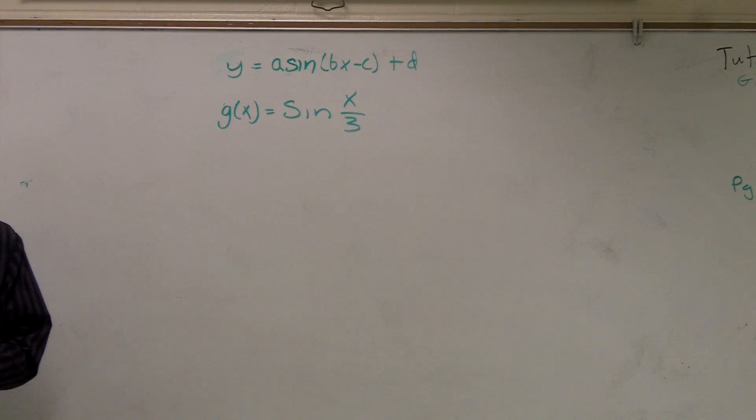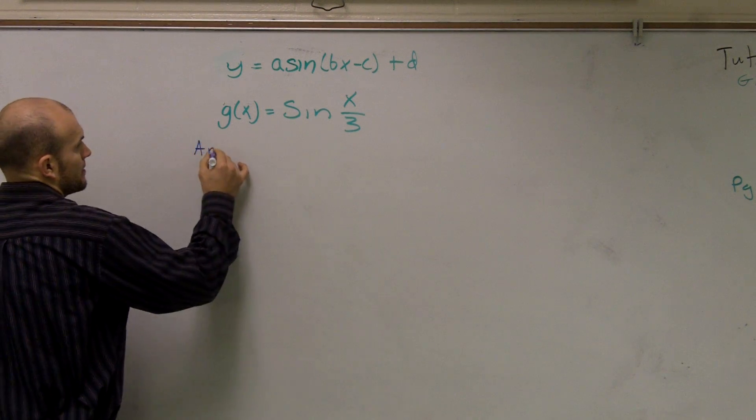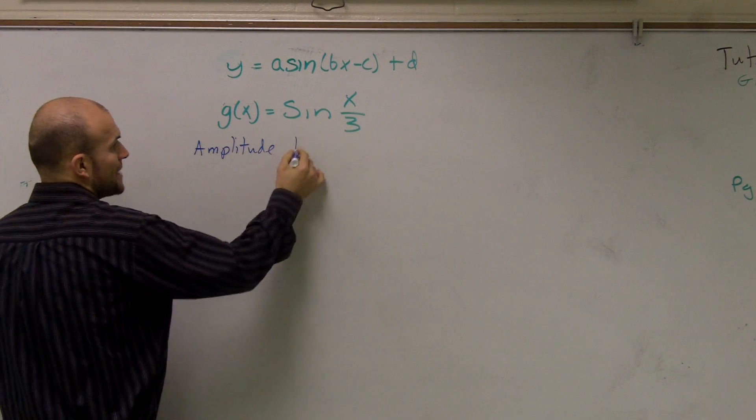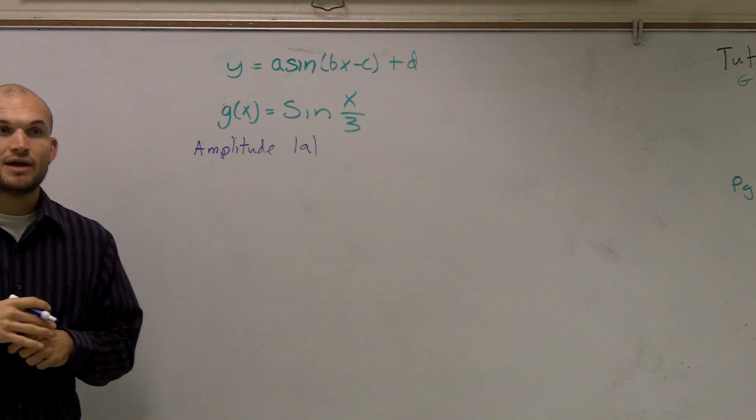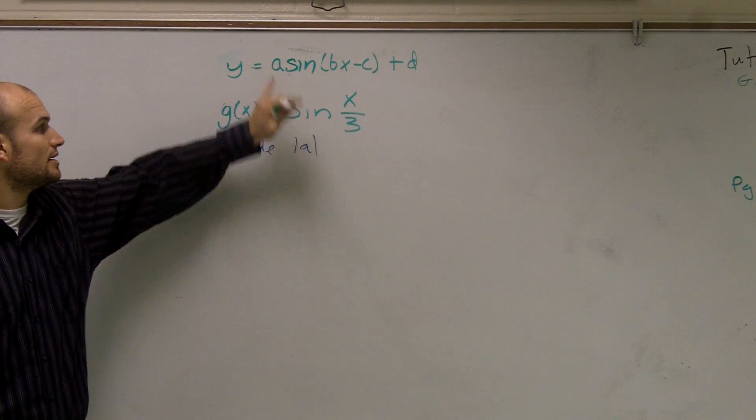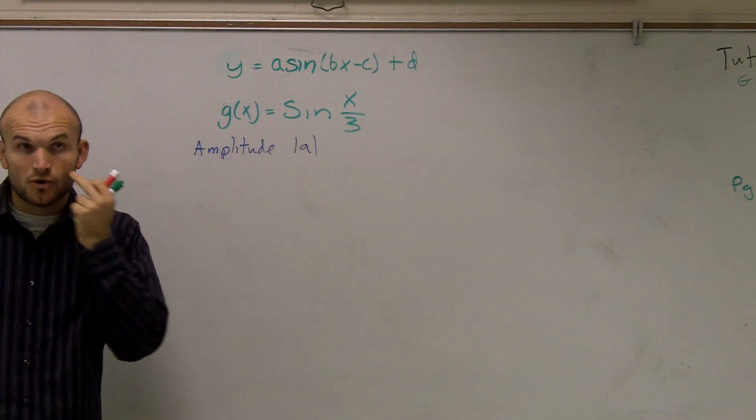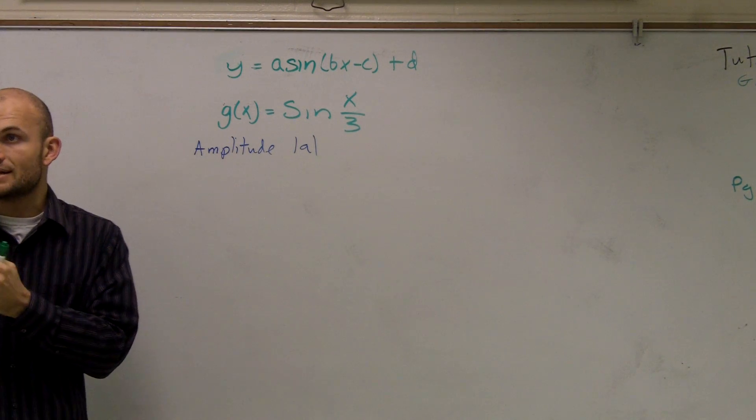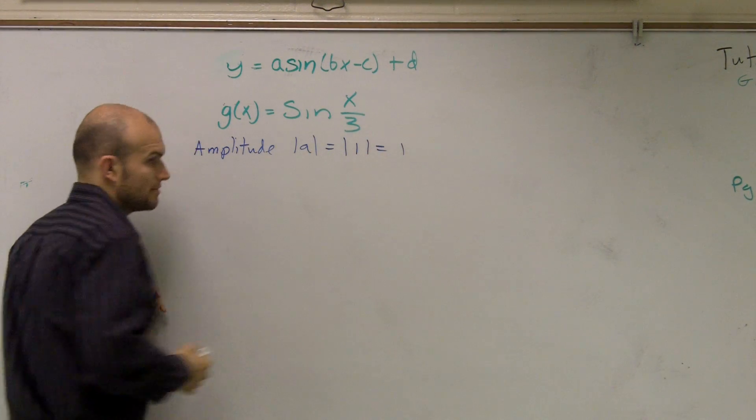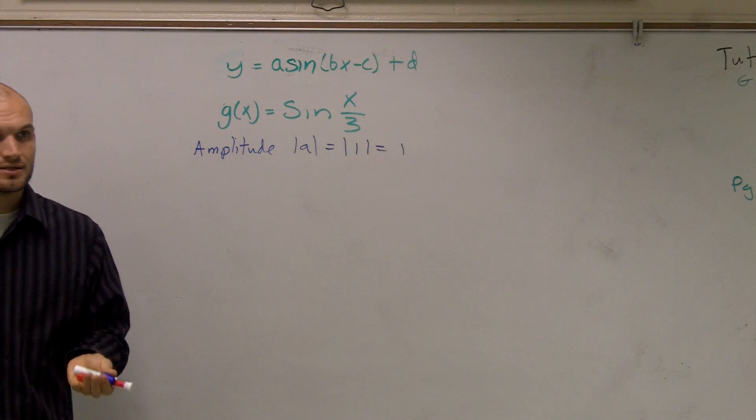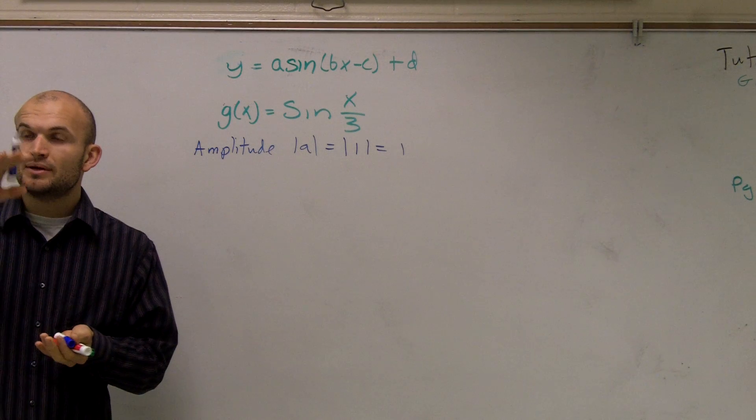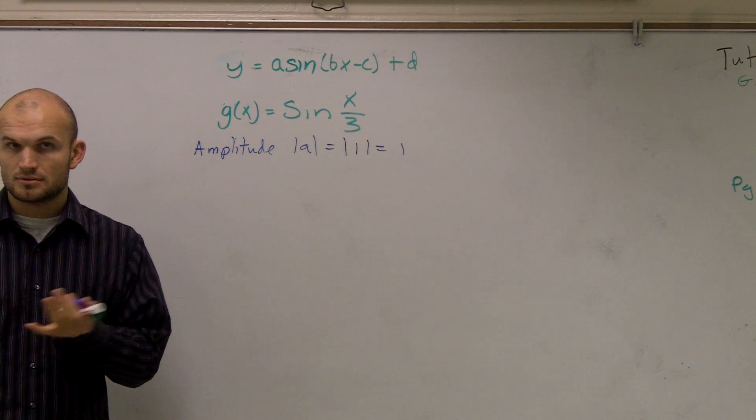So the first thing we always want to do is determine what our amplitude is. Remember that amplitude is the absolute value of A. Where is your A? A is your number that is in front of your function. So here, I do not have a number, so therefore I know that it can be 1. 1 times anything is going to be equal to your sine. So therefore, I have the absolute value of 1, which is 1. Now we need to remember, what does the amplitude tell us? The amplitude tells us the distance our graph goes up and then our graph goes down from the x-axis.